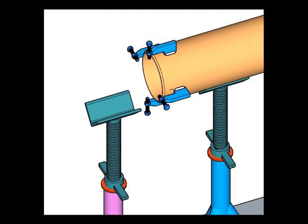Now, tack weld four jack bolts, 90 degrees apart, at the end of the pipe as shown.